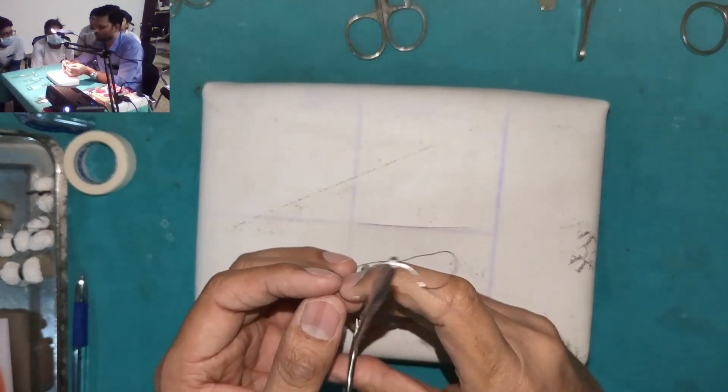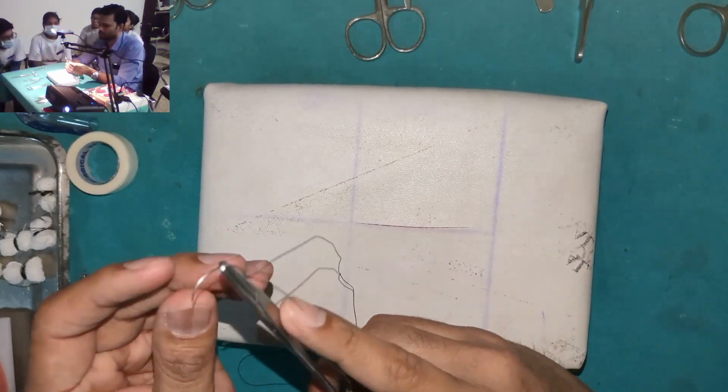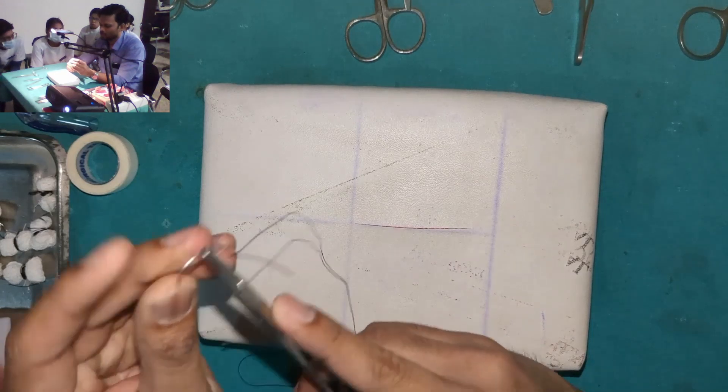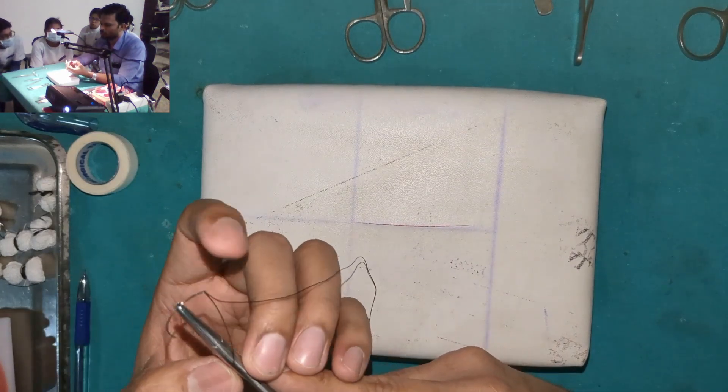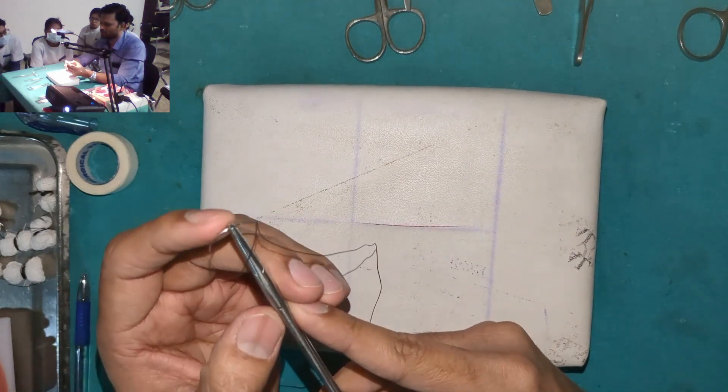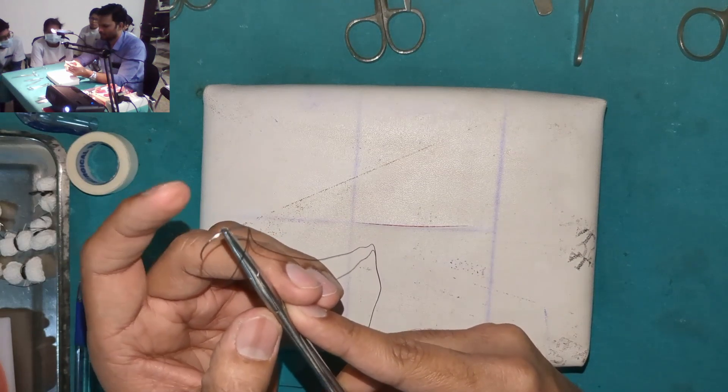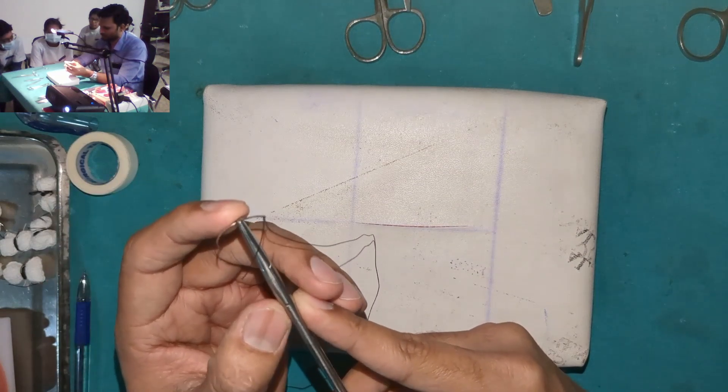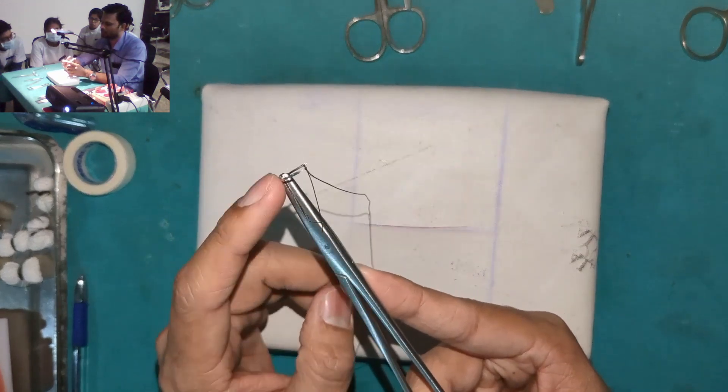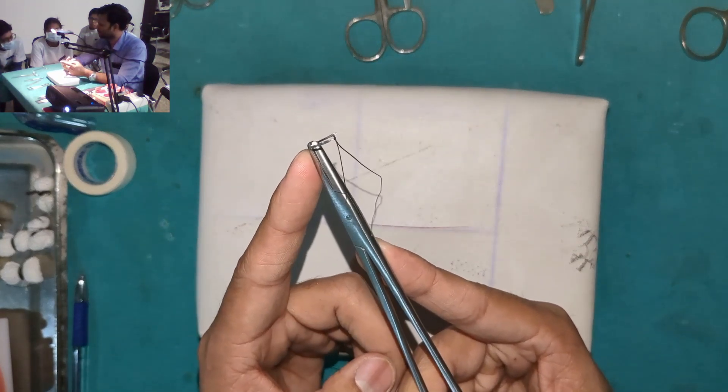If you remember your principles of suturing, one third distance from the eye or two third distance from the tip of the needle. That is one principle. Second principle is the needle should be held at the tip of the beak or the jaw, needle holder.